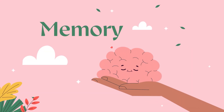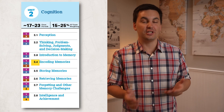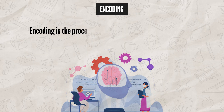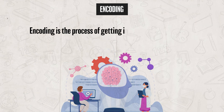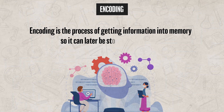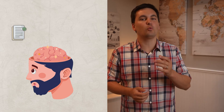Last time we started reviewing memory, and today we are going to continue our conversation by focusing specifically on encoding memory. Encoding is the process of getting information into memory so it can be stored and retrieved later on. The way information is encoded has a huge impact on whether we'll be able to remember it later.